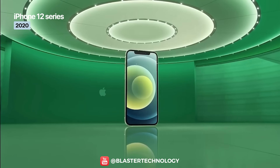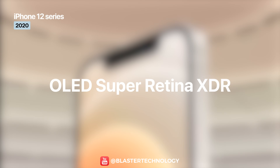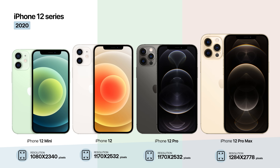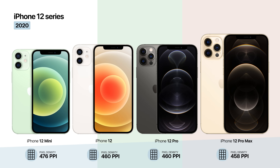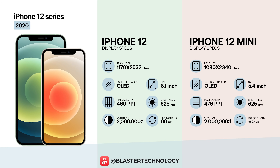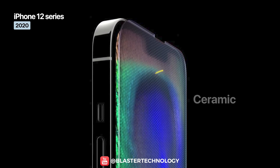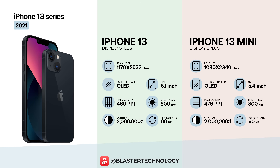The entire iPhone 12 lineup switches to OLED displays, with diagonals ranging from 5.4 to 6.7 inches, resolutions at or above Full HD, and pixel densities up to 476 ppi. The 12 and 12 mini reach a typical brightness of 625 nits, while the Pro models go up to 800 nits, with all versions hitting up to 1200 nits in HDR. The whole lineup is protected by Ceramic Shield.